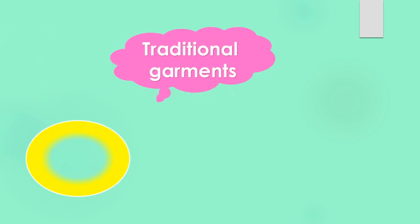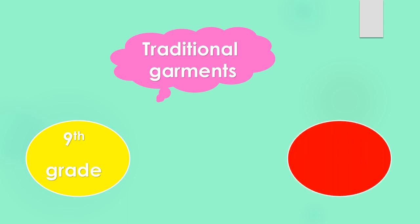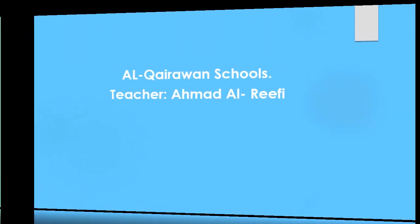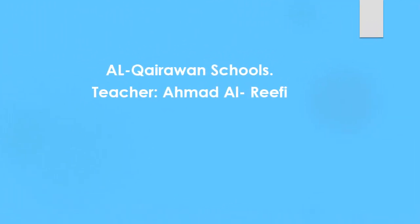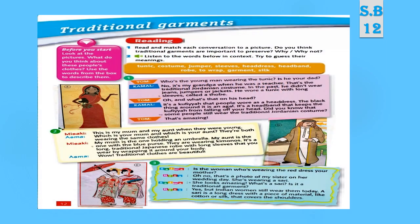I'm teacher Ahmad and today's lesson is about traditional garments for grade 9, module number two. So let's get started. Open your student's book to page 12, traditional garments. Here we have three pictures and three paragraphs.